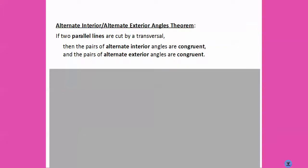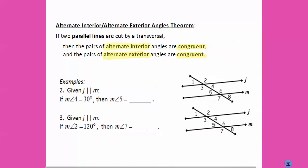Our next rule is for alternate interior or alternate exterior angles. If we have a parallel line cut by a transversal, both the alternate interior and the alternate exterior angles are also congruent. So if line J is parallel to line M — marking that with my triangle again — the measure of angle four and the measure of angle five are on alternating sides of the transversal and in the interior, so we know they're congruent. If the measure of angle four is 30 degrees, then the measure of angle five is 30 degrees.